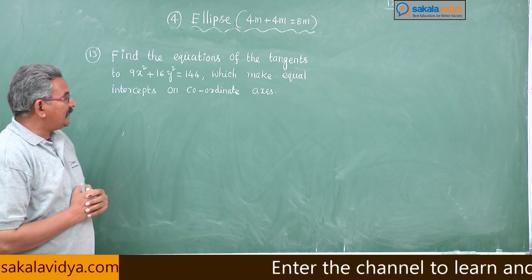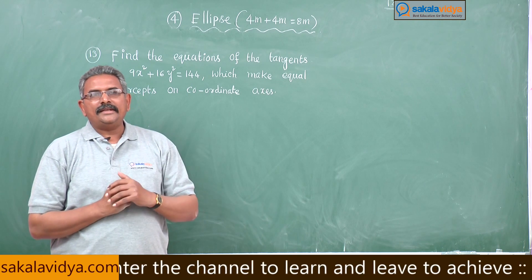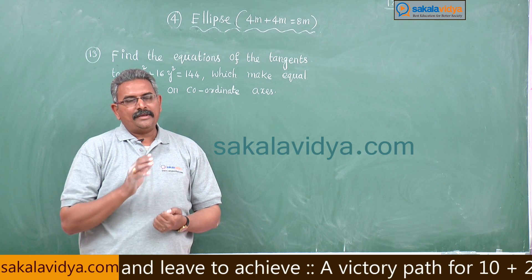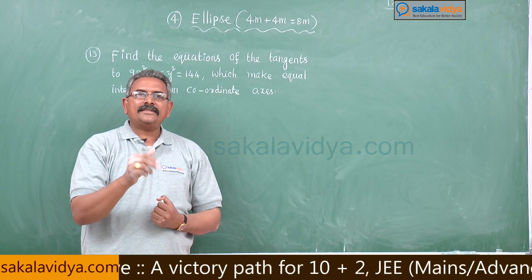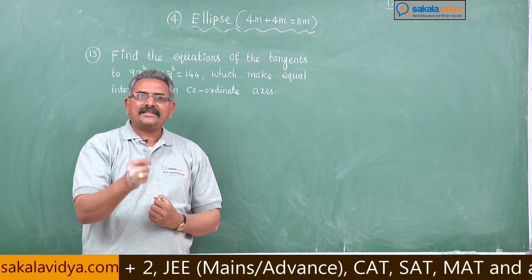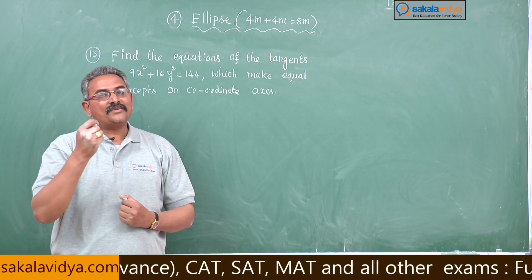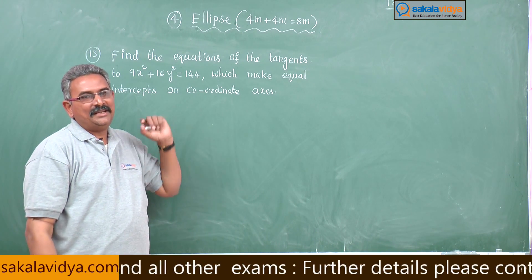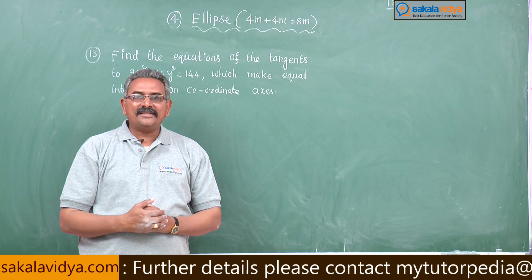Suppose, what is the equation of the line which makes equal intercepts on the coordinate axis? That may be taken as x + y = k. That means x-intercept and y-intercept are both the same. Since x + y = k is a tangent to the ellipse, we can apply the condition for tangency.